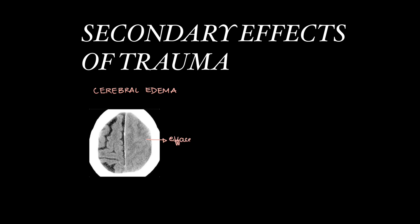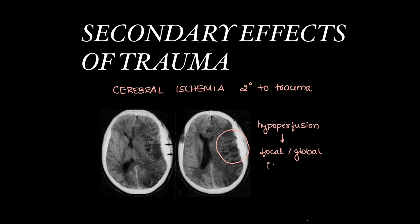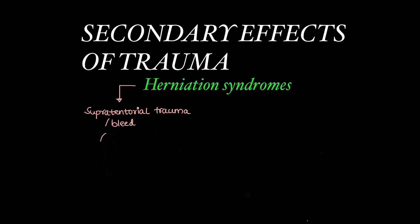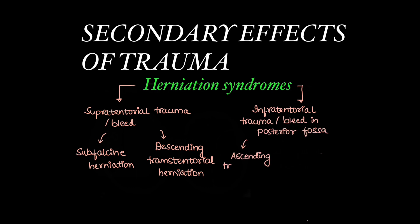Secondary effects of trauma include cerebral edema, where there will be effacement of sulcal spaces, and cerebral ischemia secondary to trauma, which can occur due to hypoperfusion causing focal or global ischemia of the brain parenchyma. Any supratentorial trauma or bleed can lead to subfalcine herniation or descending transtentorial herniation. Any infratentorial or posterior fossa bleed can lead to ascending transtentorial herniation and tonsillar herniation.